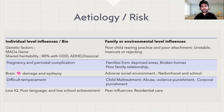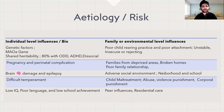The risk factors for Conduct Disorder can be divided into individual and family or environmental risks. Individual level risks include genetic factors such as the monoamine oxidase gene, shared irritability between Conduct Disorder, Oppositional Defiant Disorder, ADHD, and dissocial behavior. Other individual factors include complications during pregnancy or at birth, brain damage, epilepsy, atypical temperament, low IQ, poor language, and low school achievement.